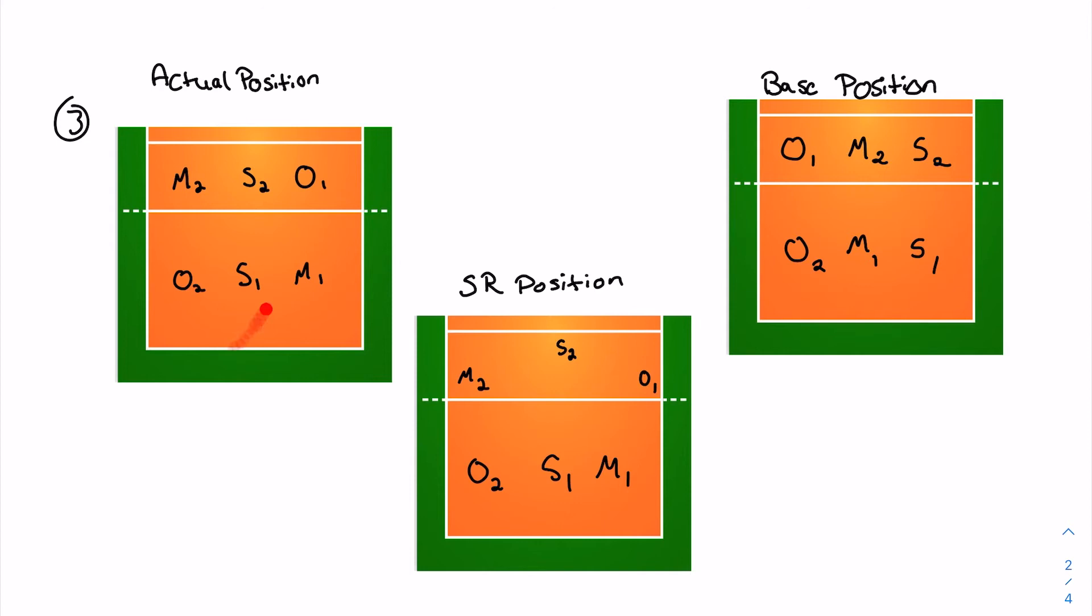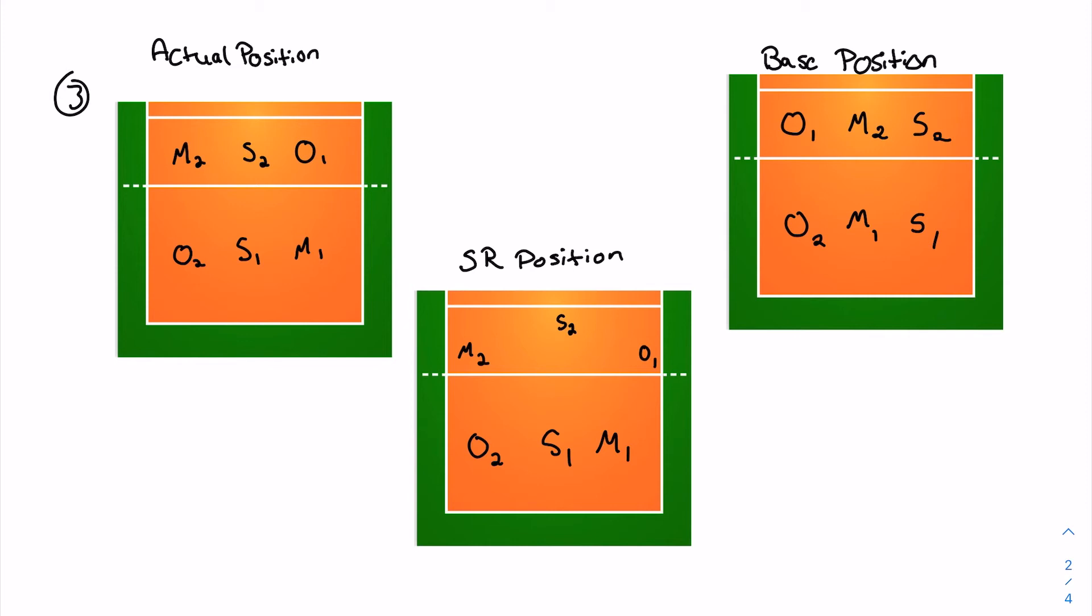So for this third rotation, your setters are now in the middle. They are in three and they are in six. The easiest thing to do for this one is very similar to the previous one, to give yourself an outside and a weak side hitter. You're going to put the setter right in the middle. Your middle is going to hit outside for one, and your outside is going to hit weak side for one, and then once the play happens, they can adjust to where they need to be.